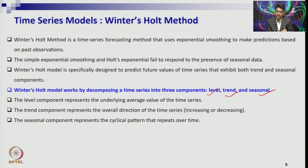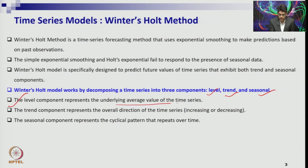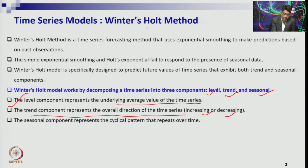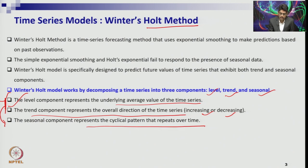We are using exponential smoothing, but with triple exponential smoothing — meaning one will be the level series, another is the base value. The level component represents the underlying average value of the time series, like the stairs example I mentioned. Then the trend component, which may be uptrend or downtrend depending on increasing or decreasing data. The third component, which is added on top of the Holt model — these first two are the Holt model combined with simple exponential smoothing — and if you extend that by adding the seasonal component, you get the Winter-Holt model.